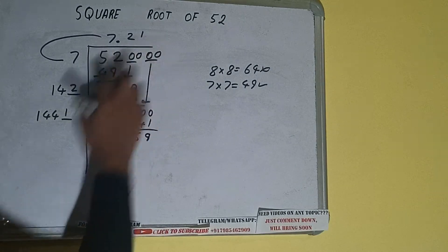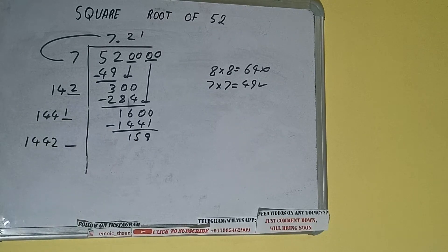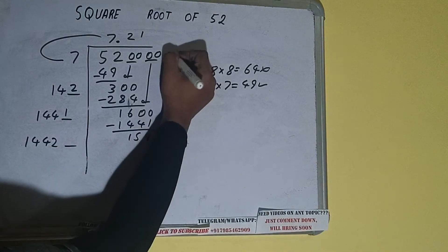Now 1441 into 1 we did, so add both. So 1441 plus 1 will be 1442 and 1 digit extra. And this number we need to make it big.